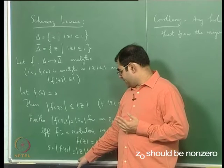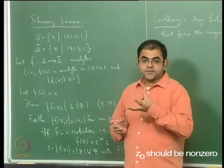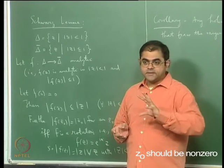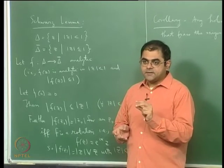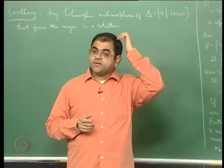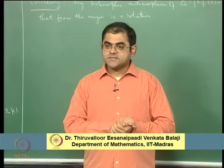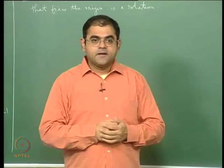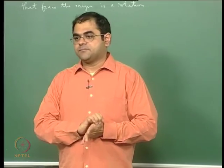A rotation is a bilinear transformation that maps the unit disc isomorphically onto the unit disc and fixes the origin. A corollary to Schwarz Lemma is that every holomorphic automorphism of the unit disc — every holomorphic self-map onto itself which is an isomorphism with a holomorphic inverse — that fixes the origin has to be a rotation of the unit disc.